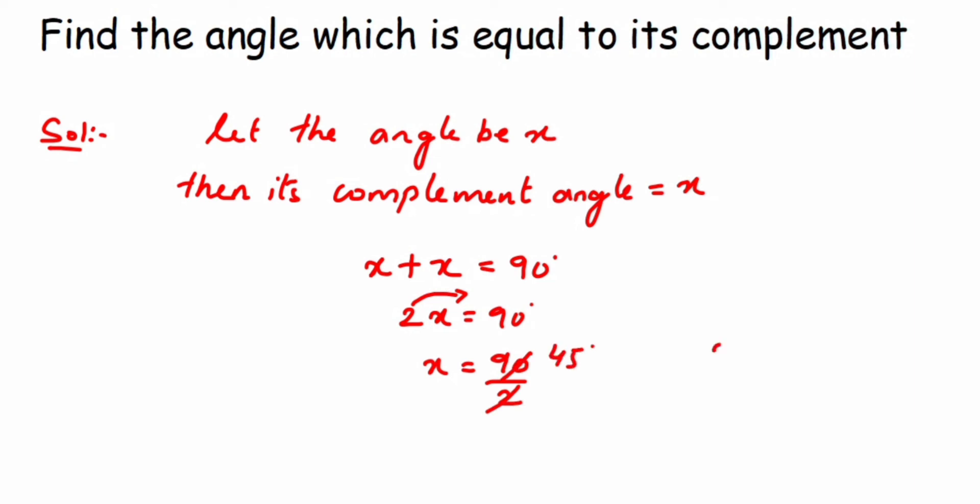So the angle is 45 degrees and its complement is also 45 degrees. The angle x equals 45 degrees, its complement is also 45 degrees, and when you add 45 and 45 you get 90 degrees.